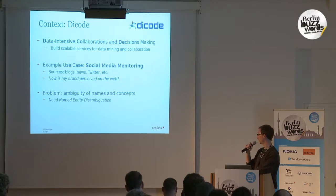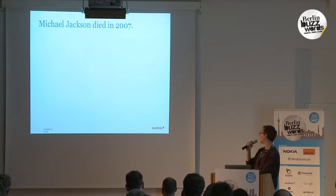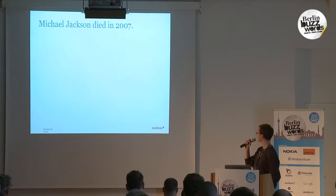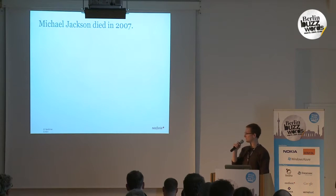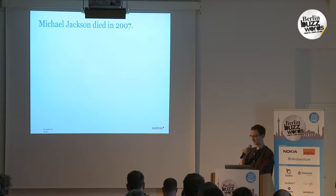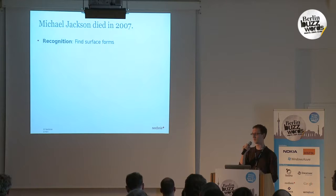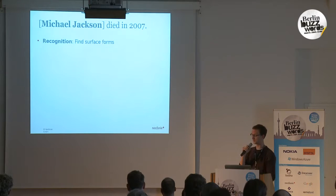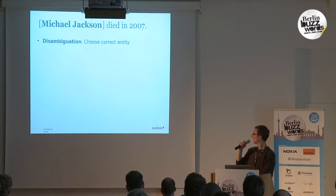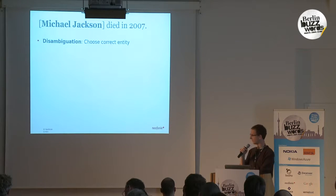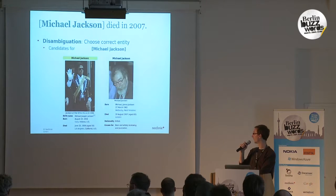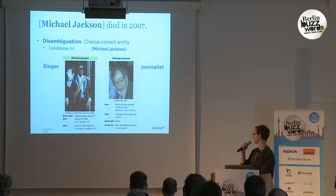So what you need is actually called named entity disambiguation. Here's a quick example. We have the sentence: "Michael Jackson died in 2007." We want to see which Michael Jackson that is. First, in the recognition phase, we find the interesting strings in the sentence — these are called surface forms. In this sentence, it's "Michael Jackson." Then in a second step, we do disambiguation: we choose the correct entity referred to by this name. For Michael Jackson, we have two candidates — the singer and the journalist — and our algorithm has to decide which one it is.